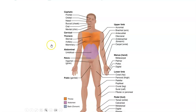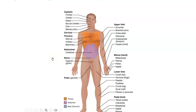Thoracic refers to the chest region. Specifically, sternal refers to the midpoint of the chest where the breastbone is — the breastbone is called the sternum. Axillary refers to the armpit. Mammary refers to the breast region. The abdominal region is shown in purple, and the umbilical region is also called the navel region. The pelvic region is the lower portion of the abdominal region. Together they're often called the abdominal pelvic region. The groin region is inguinal, and then the pubic or genital region is shown here.